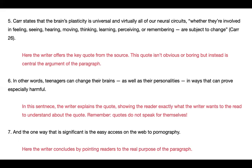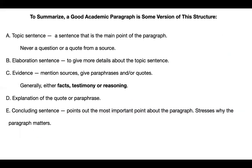So what I want you to notice, to summarize, is that good academic writing looks like this: It starts with a topic sentence — the main point of the paragraph, never a question or a quote, but a claim that states something. Then there's an elaboration, which gives more detail about the topic sentence. Then it gives evidence — that could be two, three, or four sentences — it mentions sources, gives paraphrases and/or quotes, generally facts from a source, testimony from a source, or reasoning. Then there's an explanation of the quote or paraphrase — the writer stepping in to say 'here's what I want you to understand about that.' And then the concluding sentence that points out what's most important about the paragraph, stresses why the paragraph matters. That's how you do an academic paragraph. Best of luck to you.